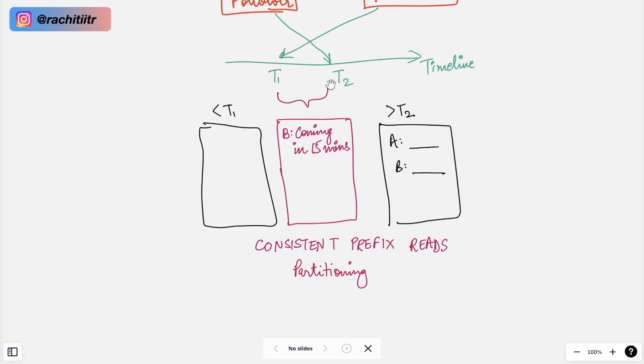But for this brief duration between T1 and T2 you are actually seeing this in your screen which is coming in 15 minutes. How did B see the future is something which you can question here. This is what we call as consistent prefix reads and this is a problem which comes with partitioning which we will understand in the future videos of our system design series. Consistent prefix reads dictate that all the writes which are being happening in some sequential order, that order must not be broken when you are doing the reads.